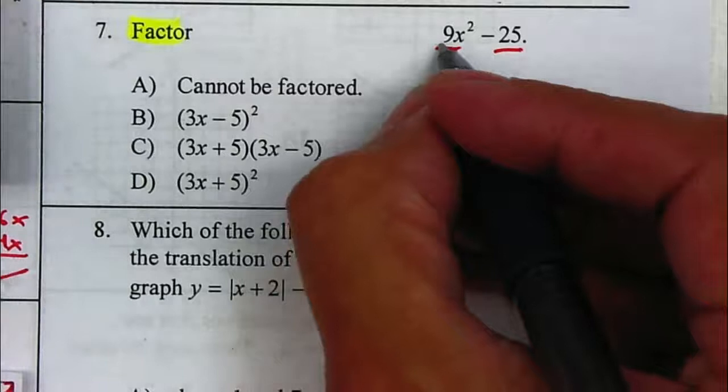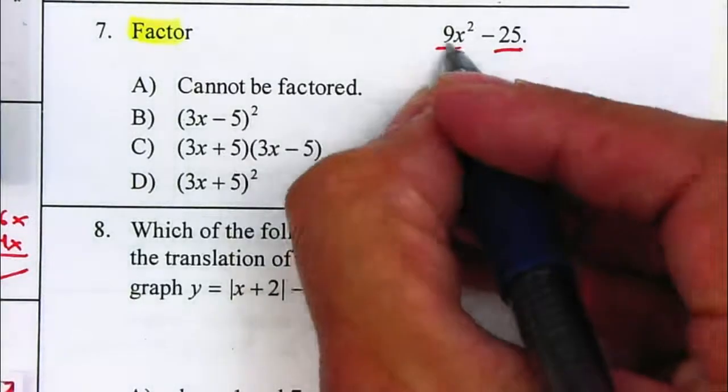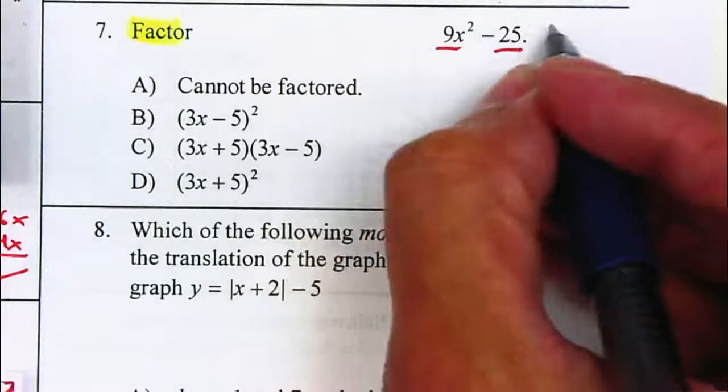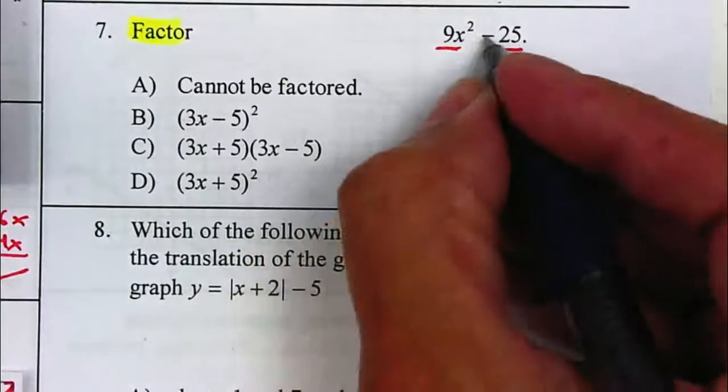So you should be able to recognize that in this case they both are squares. 9x squared is a square and 25 is also a square. And there's a minus in between.